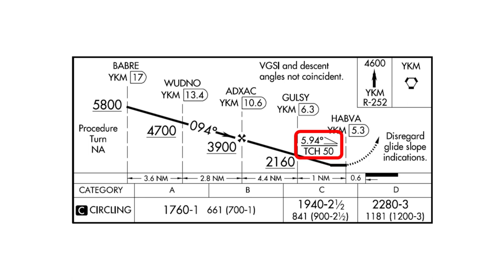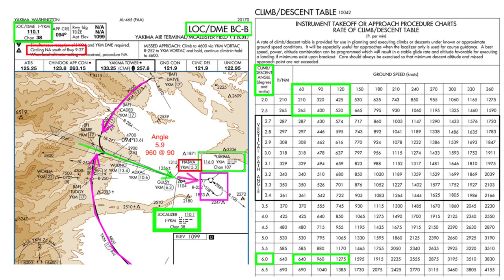The process of annotating the chart calls attention to the subtle detail and prompts more research. Adding a text annotation to the plan view is a reminder about the steep approach. You can look up the required rate of descent in the climb-descent table in the TPP, and then transfer the information directly to the chart. I used 90 knots ground speed, typical for an airplane like a Cessna 172, which to meet this gradient requires a descent rate of 960 feet per minute.